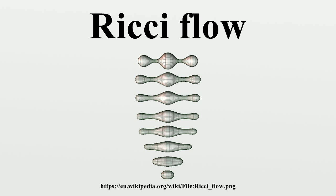For three-dimensional manifolds, Perelman showed how to continue past the singularities using surgery on the manifold. A significant two-dimensional example is the Cigar-Soliton solution, which is given by the metric on the Euclidean plane. Although this metric shrinks under the Ricci flow, its geometry remains the same. Such solutions are called steady Ricci solitons. An example of a three-dimensional steady Ricci soliton is the Bryant solution, which is rotationally symmetric, has positive curvature, and is obtained by solving a system of ordinary differential equations.